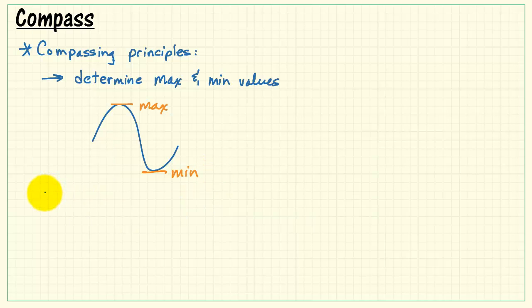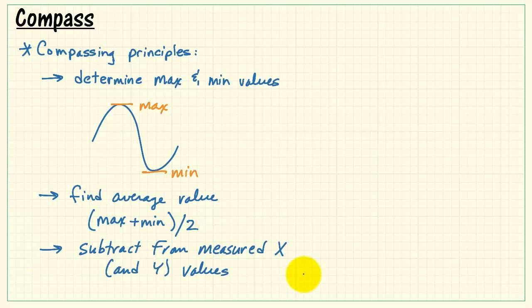To properly calibrate the compass, then, we need to determine the max and min values of those sine wave curves. Find the average value, which would be the max plus the minimum value divided by 2, and then subtract that from subsequent measurements, both in the X and the Y direction. You do the subtraction before computing the angle.